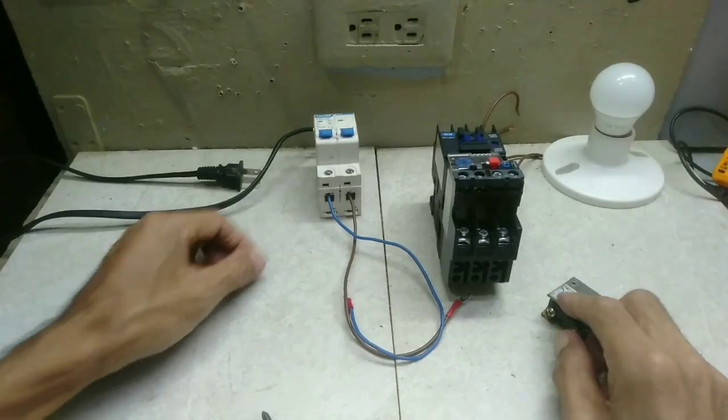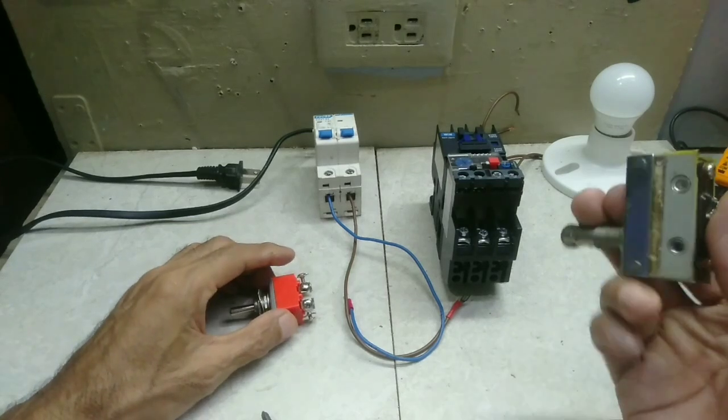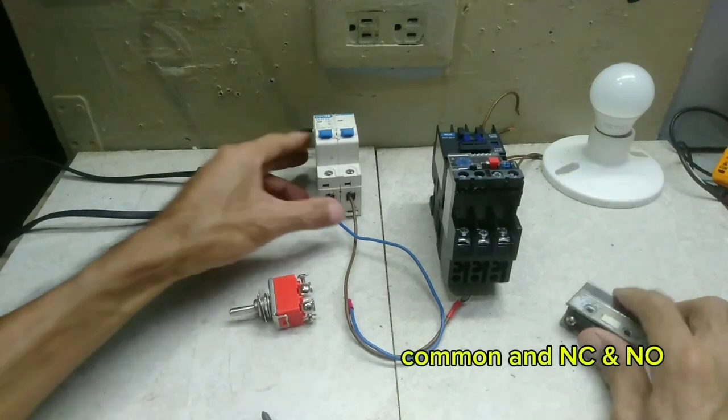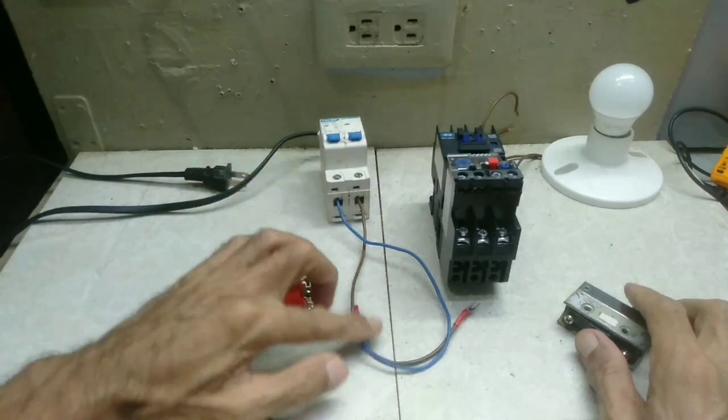Okay guys, the moment of truth. We will make a simple wiring for a limit switch. A circuit breaker, 2-pole 2-wire.